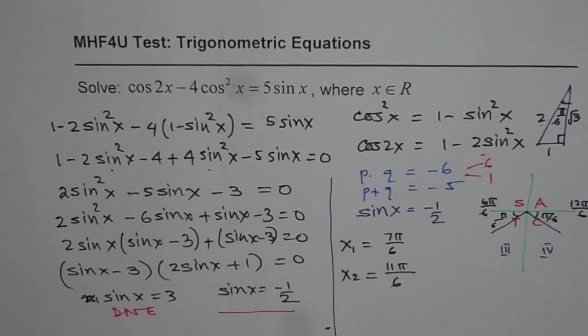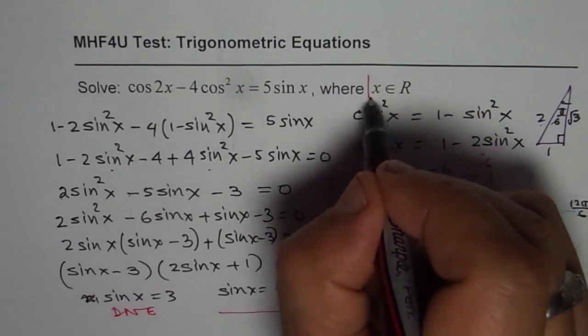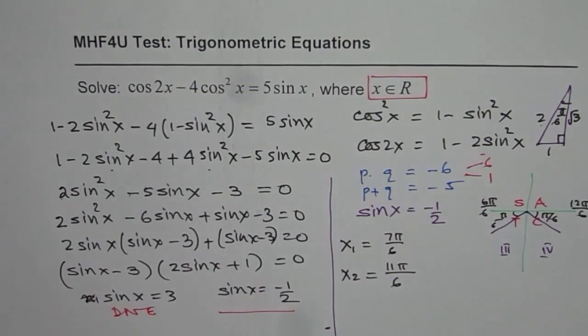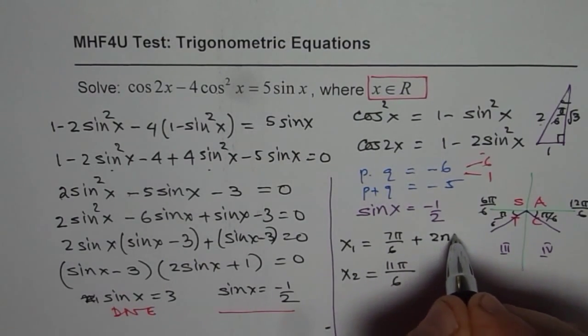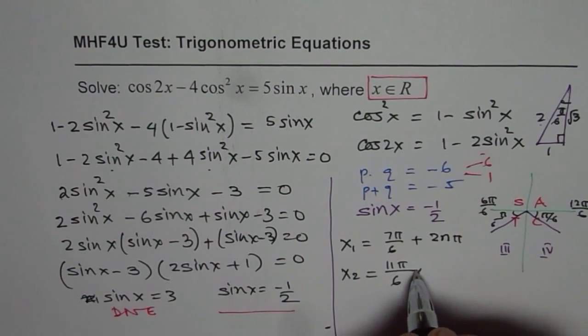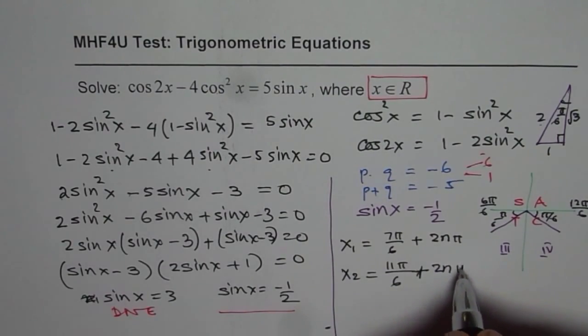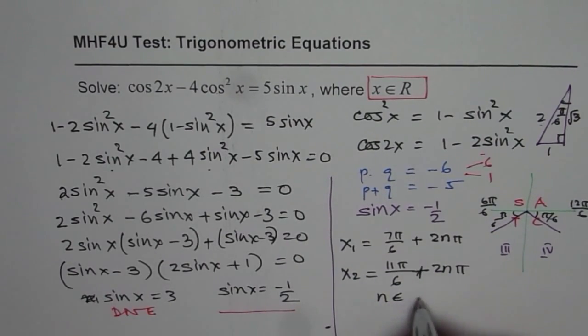Now, since we need a general solution, it is very important to understand these things. Otherwise you are going to lose a lot of marks. And the time period for sine is 2 pi. So we can write this plus 2 n pi, plus 2 n pi, where n belongs to integers.